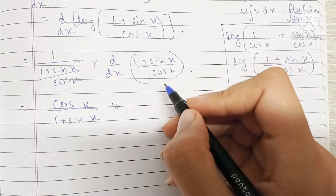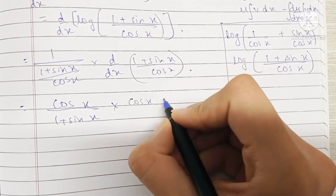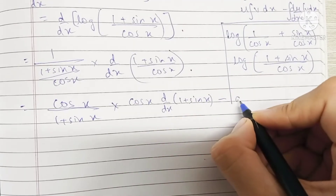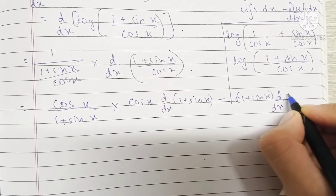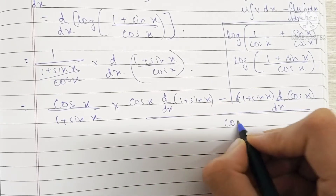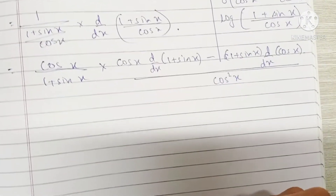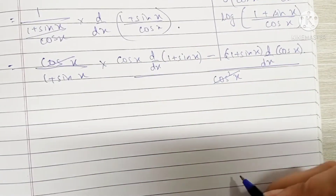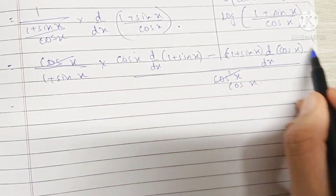Using the u by v rule, the differentiation of this term would be cos x into differentiation of (1 plus sin x) minus (1 plus sin x) into the differentiation of cos x, upon cos x the whole square. Now as you can see, one of the cos will get cancelled because this is cos x right here and we have cos squared x in the denominator, so this becomes cos x.